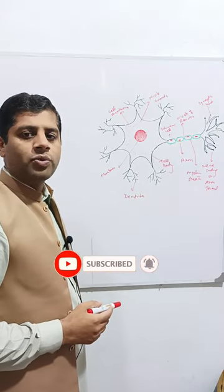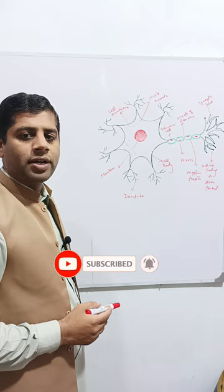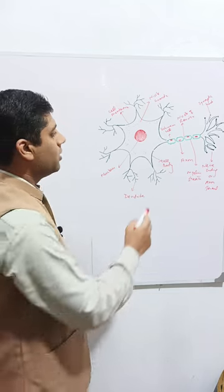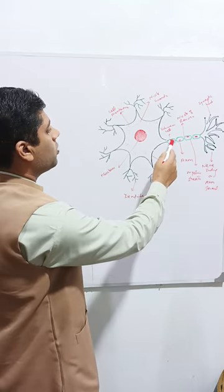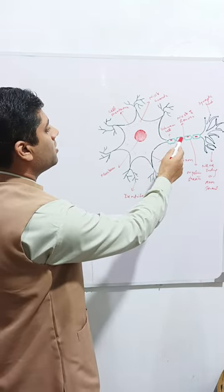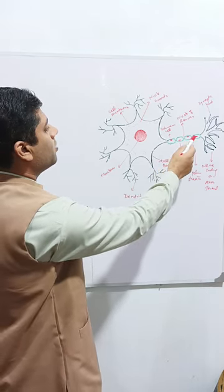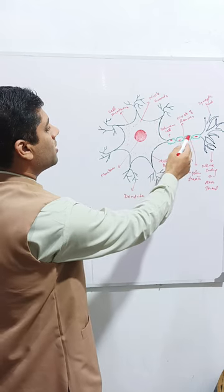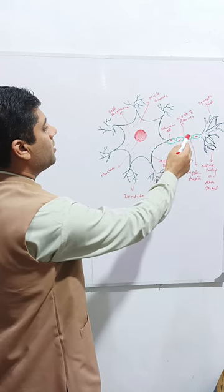This axon may be of two types: myelinated or non-myelinated. In case of myelinated neurons, the axon is covered by the Schwann cells. These are the Schwann cells separated by the nodes of Ranvier, and this Schwann cell secretes the myelin sheath.